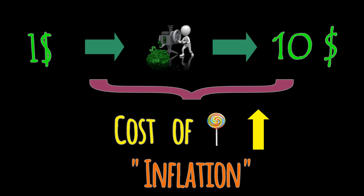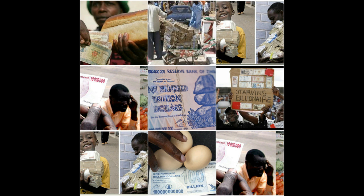So the cost of each candy becomes $2. You can clearly see that an increase in the amount of money raises the price of goods. This is called inflation. In the late 1990s, the Zimbabwean government started printing money without any basis, which resulted in a hyperinflation situation in the country.